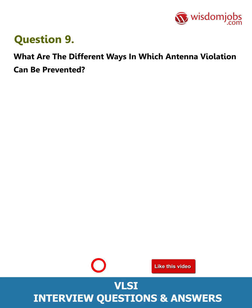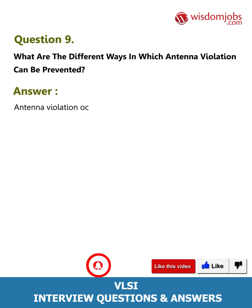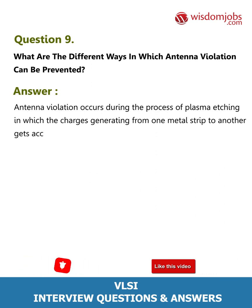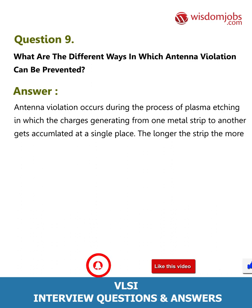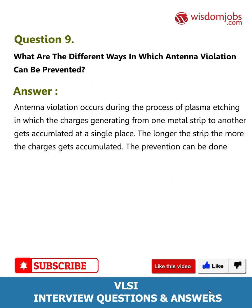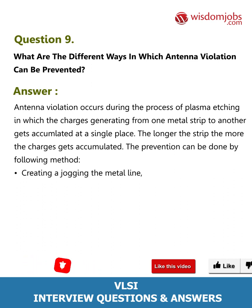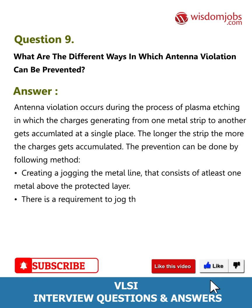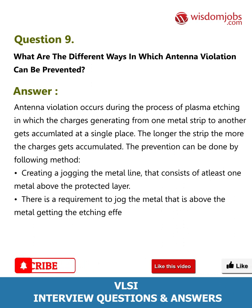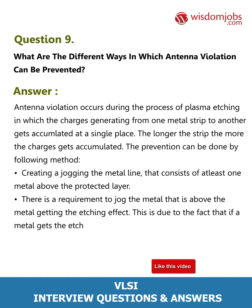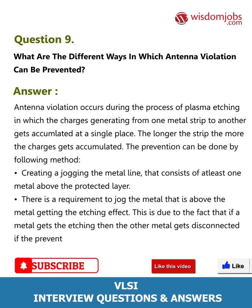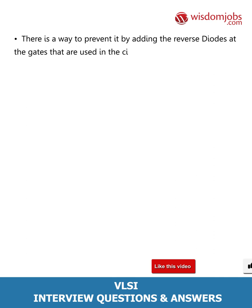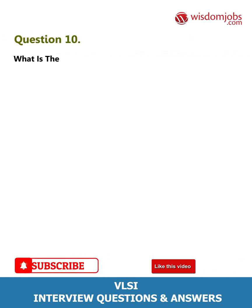Question 9: What are the different ways in which antenna violation can be prevented? Answer: Antenna violation occurs during plasma etching, where charges generated from one metal strip accumulate at a single place — the longer the strip, the more charges accumulate. Prevention methods include: creating a jog in the metal line consisting of at least one metal above the protected layer; jogging the metal above the layer receiving the etching effect; and adding reverse diodes at the gates used in the circuits.